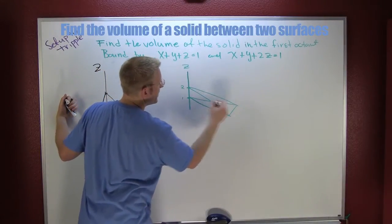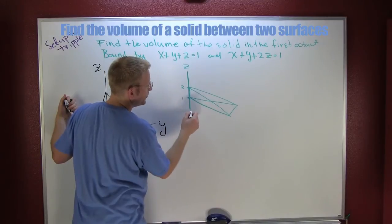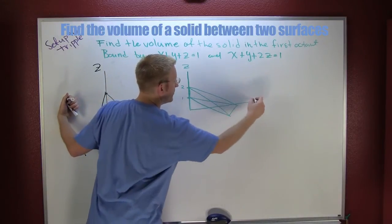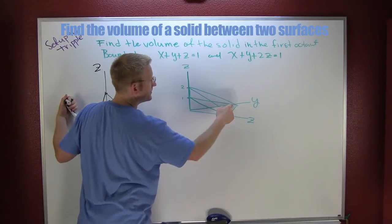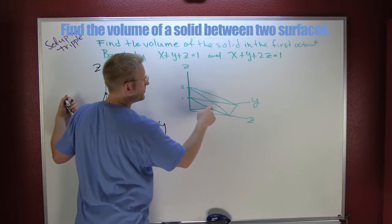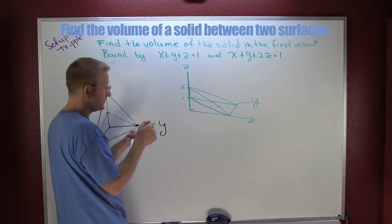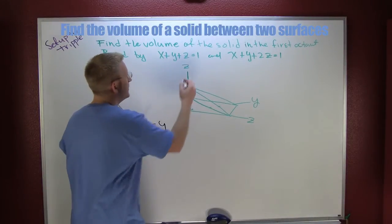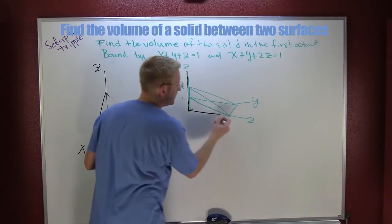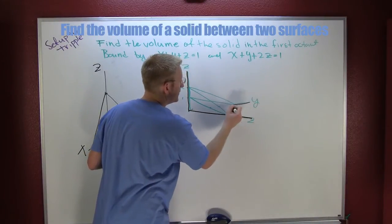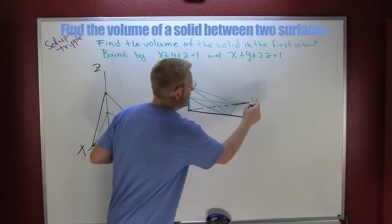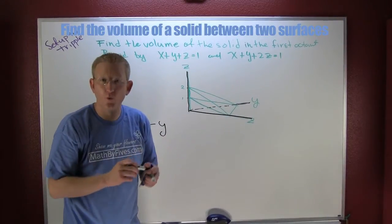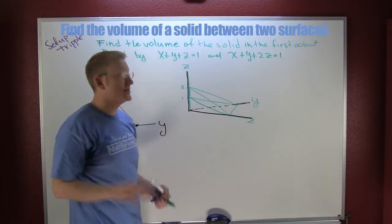And like that. What we have is a wedge if you will. This is my y and this is my z axis. Perhaps I could have put those in a different color. There, that's better.